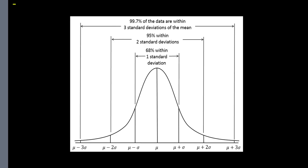The normal model is this beautiful bell-shaped curve. Smack dab in the middle is what you expect — that's the mean. The further you move above or below the mean, the less likely those values occur. We go one, two, and three standard deviations above and below. Traditionally, 68% of data is within one standard deviation, 95% within two, and 99.7% within three standard deviations.